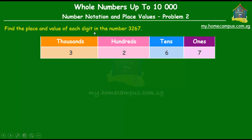Now, what are these thousands, hundreds, tens, and ones? Well, they are called the place. So in the number 3267, the digit 7 is said to be in the ones place. The digit 6 is said to be in the tens place. The digit 2 is said to be in the hundreds place. And the digit 3 is said to be in the thousands place. So that's about place.